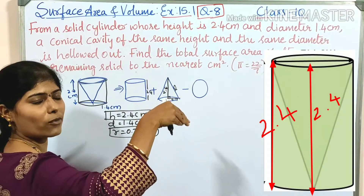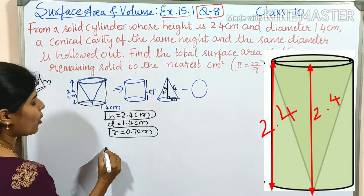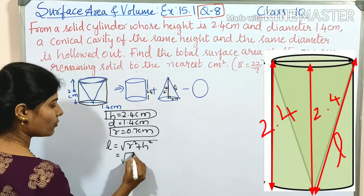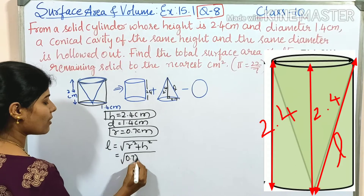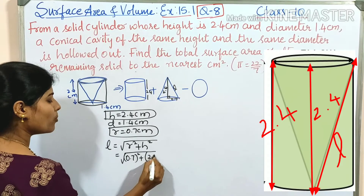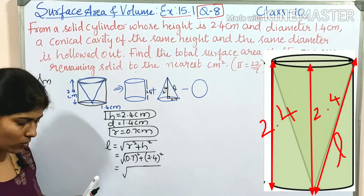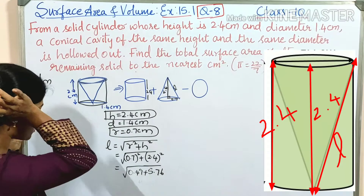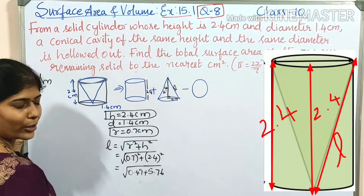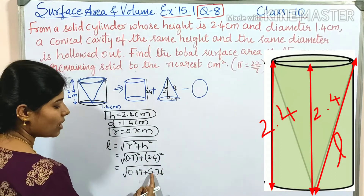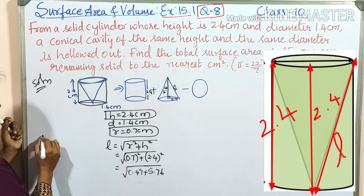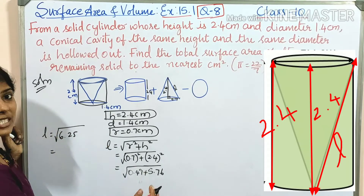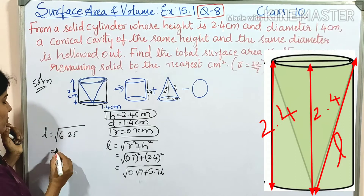For the curved surface area of the cone, the formula is πrl, so we need to find l. The formula is l = √(r² + h²) = √(0.7² + 2.4²) = √(0.49 + 5.76) = √6.25. The square root of 6.25 is 2.5, so l = 2.5 centimeters.